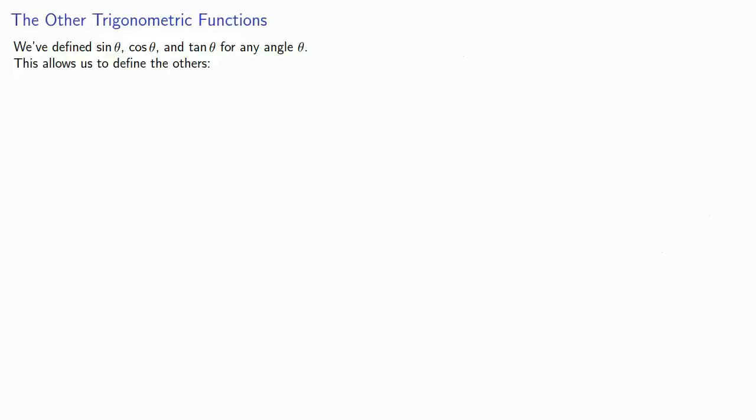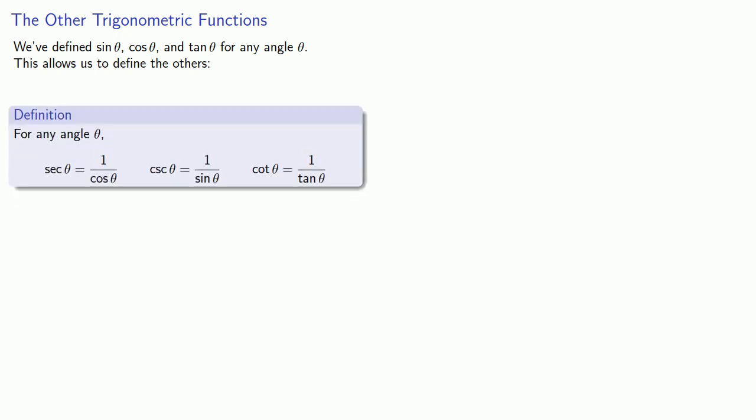Now we've defined sine, cosine, and tangent for any angle theta. But the other trigonometric functions can also be defined in terms of sine, cosine, and tangent. And so this allows us to define the rest for any angle theta. Secant theta is 1 over cosine, cosecant is 1 over sine, and cotangent is 1 over tangent.